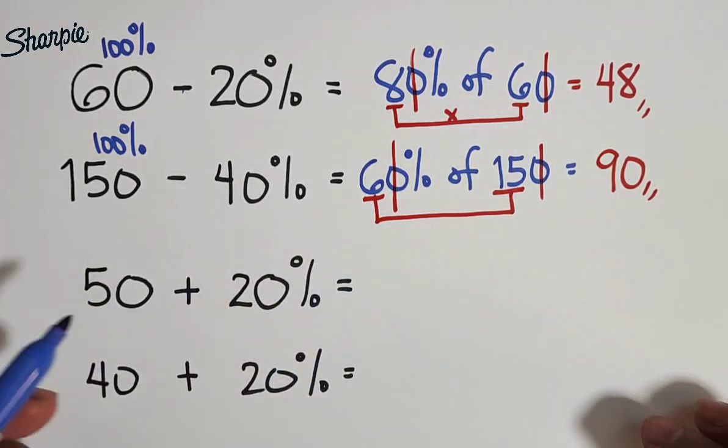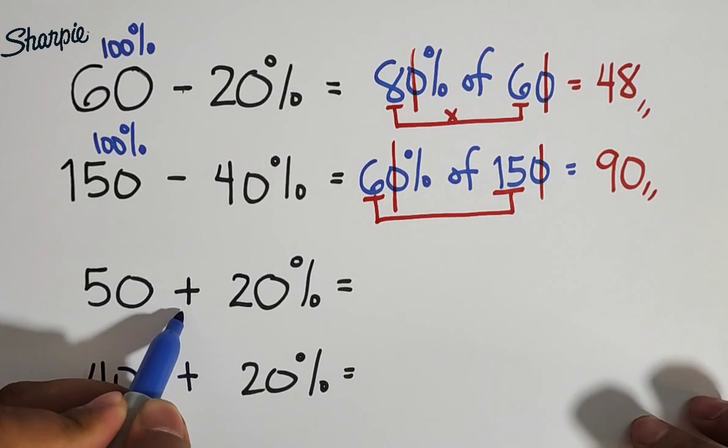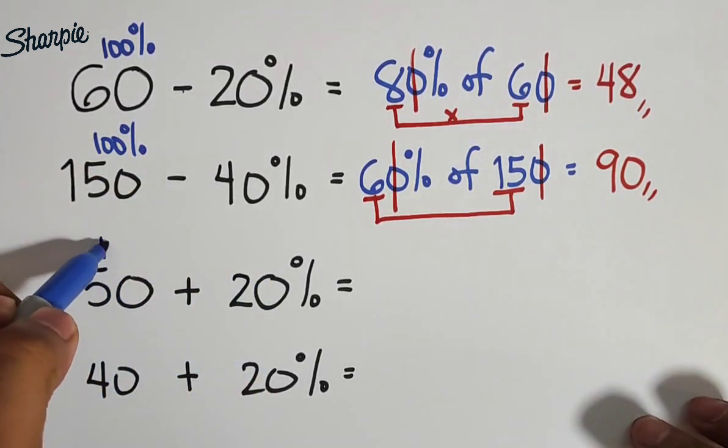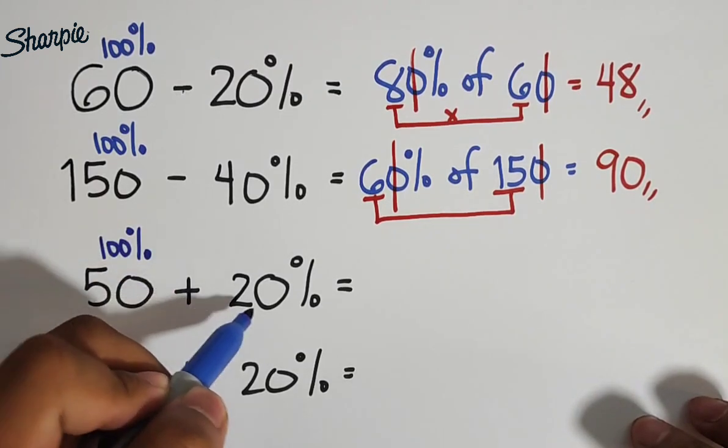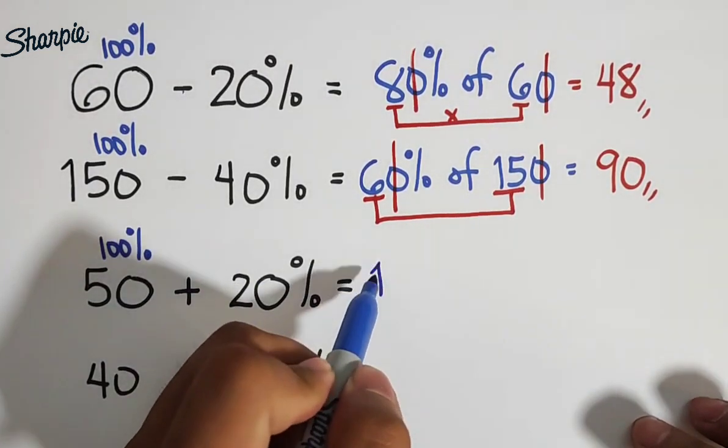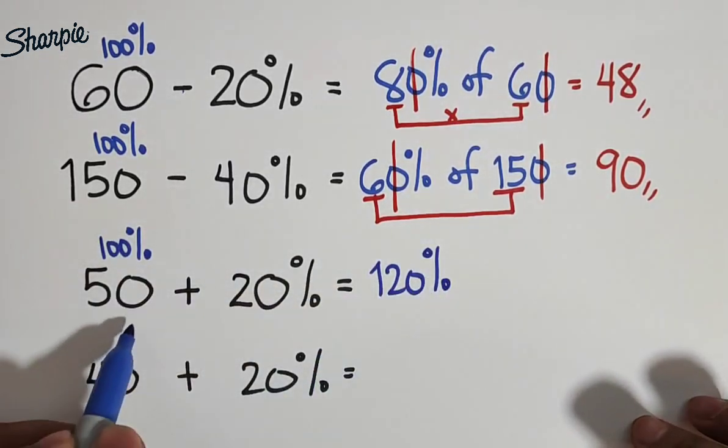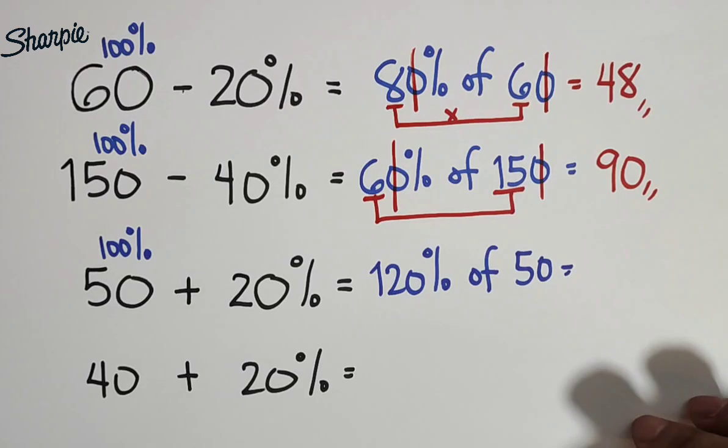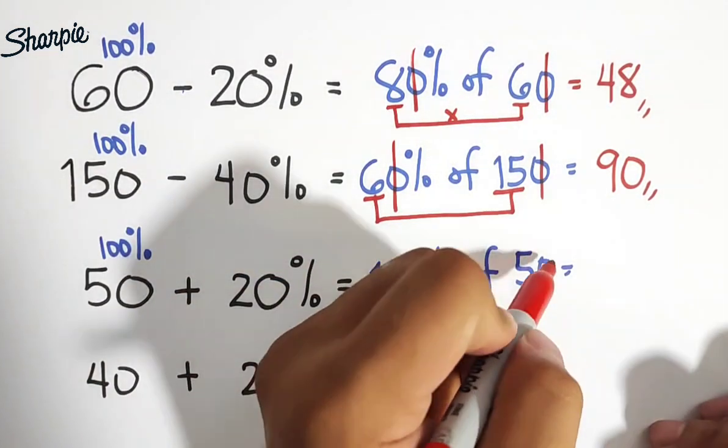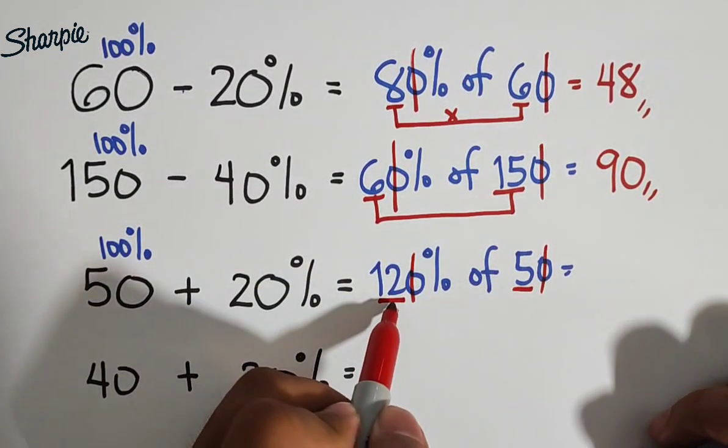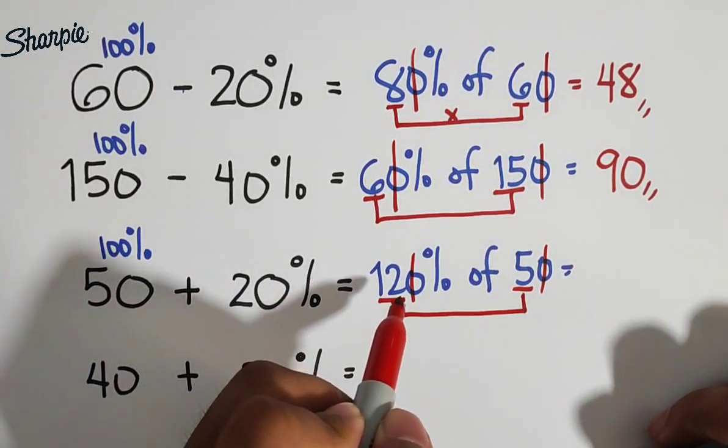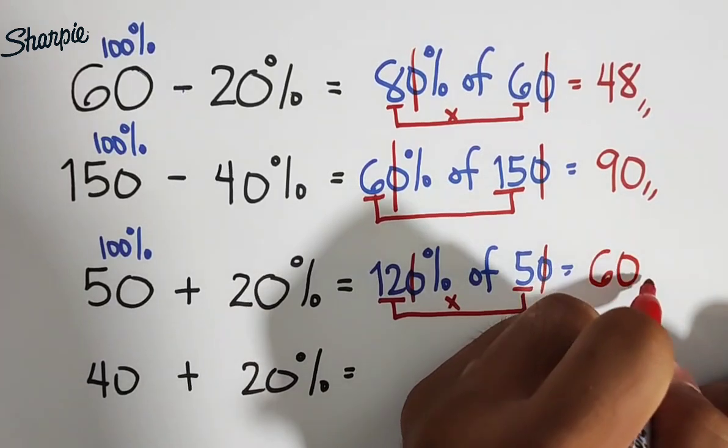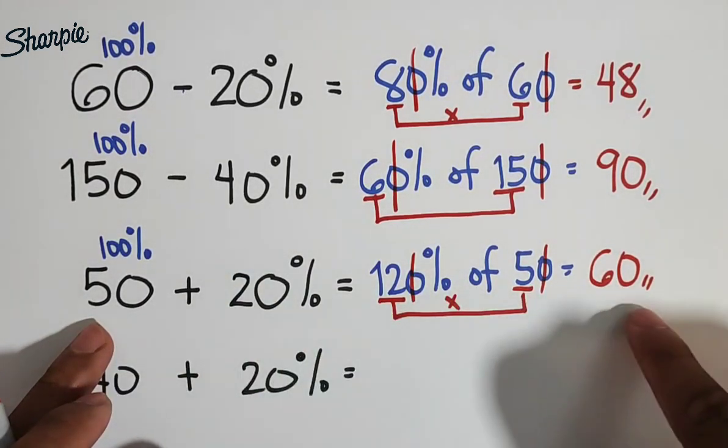We have 50 plus, this is plus, this is different from subtraction, 50 plus 20%. So this is your 100% plus 20%. So we have now 120% of 50. Okay, so we need to eliminate 1, 0, 1, 0. So we will multiply 12 by 5. So we have now 12 times 5, which will give us the answer of 60. So again, 50 plus 20% is 60.